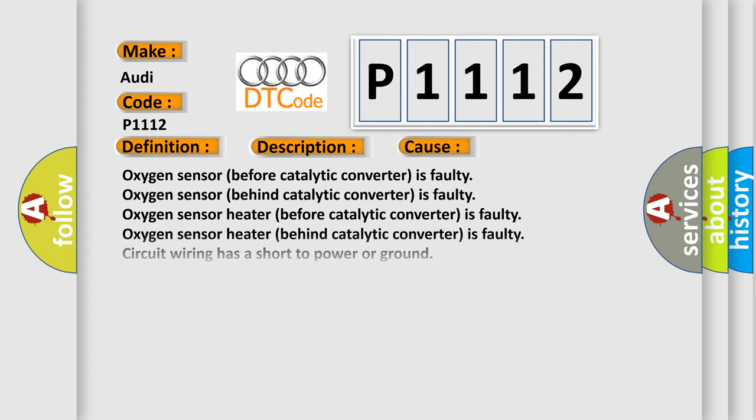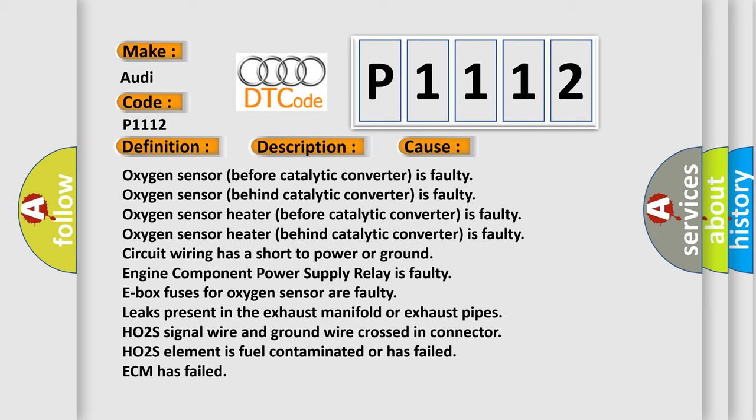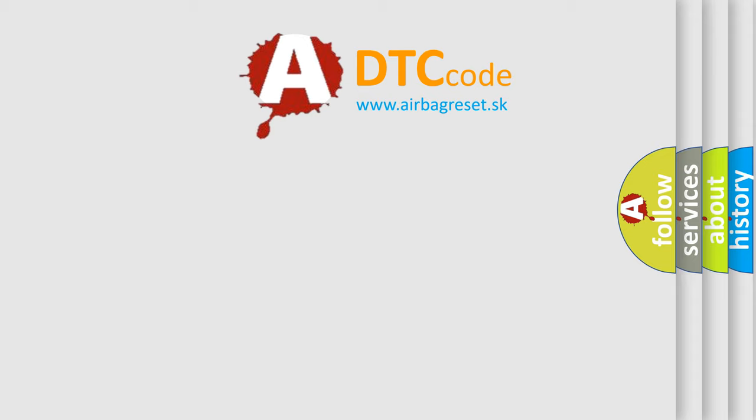This diagnostic error occurs most often in these cases: oxygen sensor before catalytic converter is faulty, oxygen sensor behind catalytic converter is faulty, oxygen sensor heater behind catalytic converter is faulty, circuit wiring has a short to power or ground, engine component power supply relay is faulty, E-box fuses for oxygen sensor are faulty, leaks present in the exhaust manifold or exhaust pipes, HO2S signal wire and ground wire crossed in connector, HO2S element is fuel contaminated or has failed, or ECM has failed. The airbagreset.sk website aims to provide information in 52 languages.